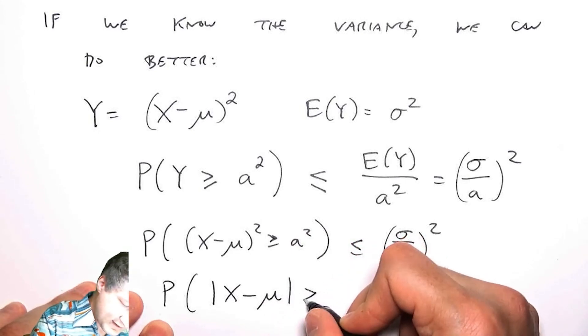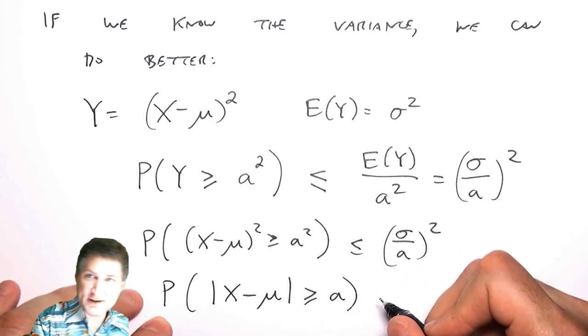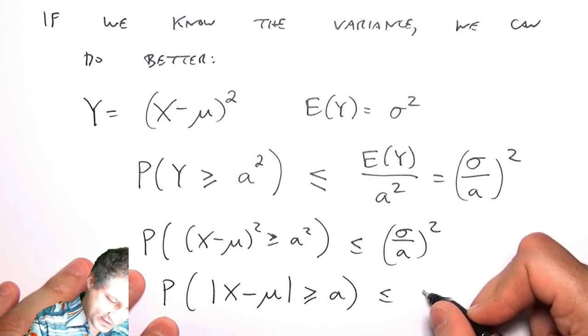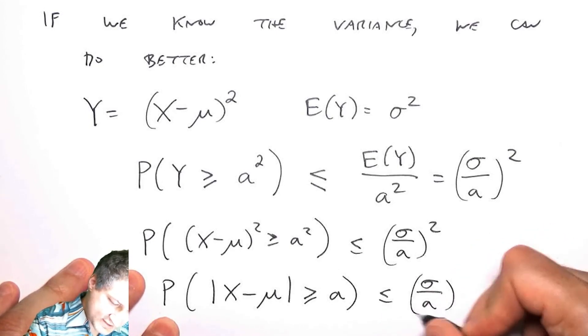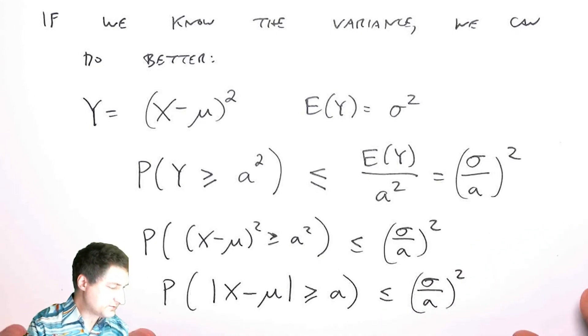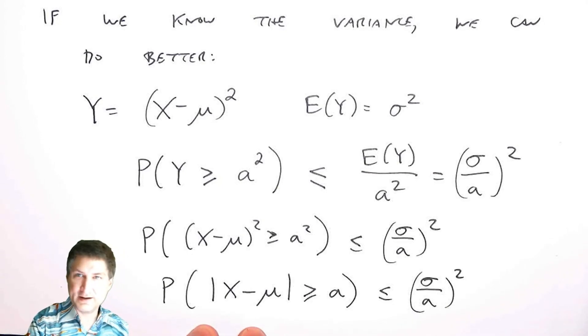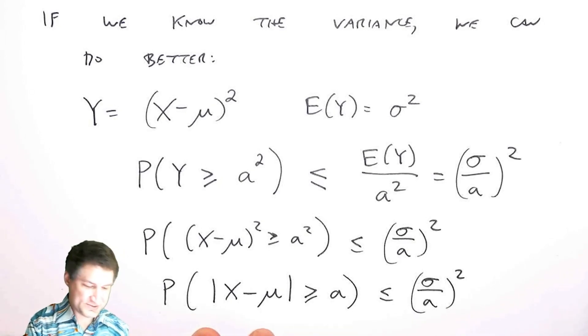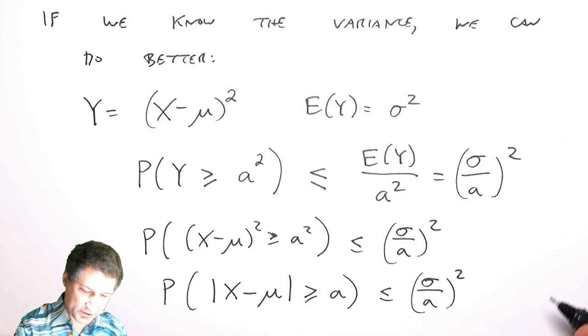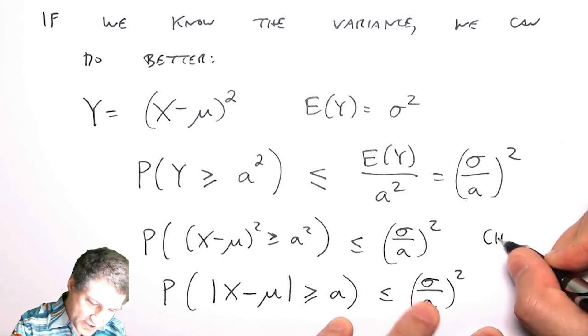A different way of looking at this is saying the probability that (X - μ)² is greater than or equal to this value is less than or equal to this. Or I can think about saying what's the probability that I'm more than a away from the mean. This gives a bound on how probable it is that X is further away than the mean than some value. It's this number if I know the variance. This is called the Chebyshev inequality.